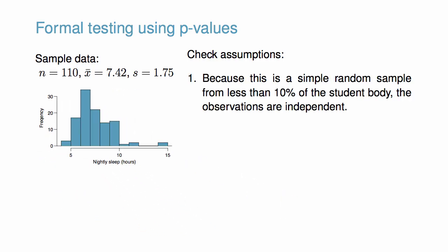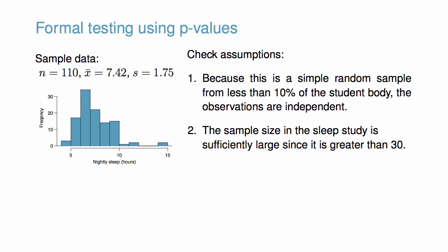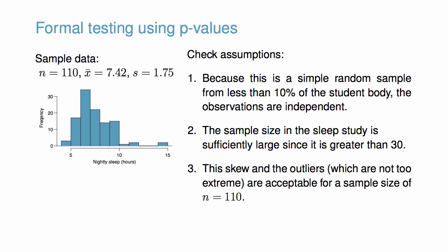First, because this is a simple random sample from less than 10% of the student body, the observations are independent. Second, the sample size in the sleep study is sufficiently large since it's greater than 30. Third, although the data show moderate skew in the histogram and the presence of a couple of outliers, it is not too extreme and is acceptable for a sample size of 110. With these conditions verified, the normal model can be safely applied to the sample mean and the estimated standard error will be accurate.